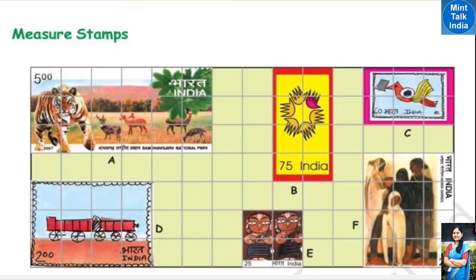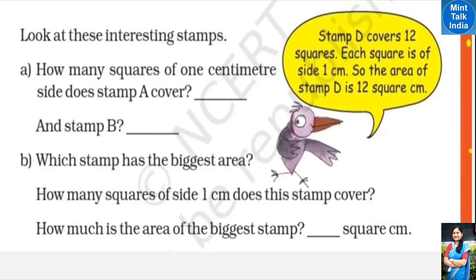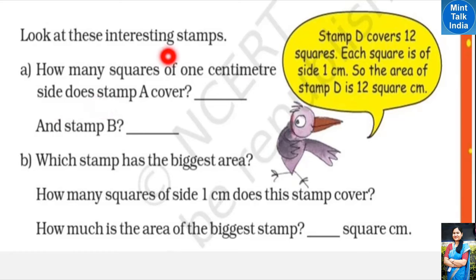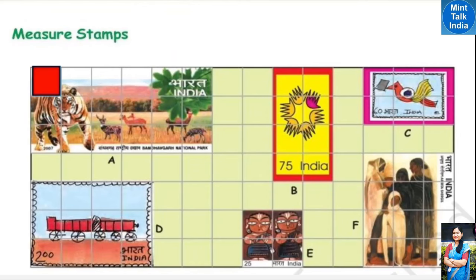Next is the 'Measure Stamps' activity. Here we have some stamps on square grid paper. Square grid paper is a paper with small squares. We have to find out the length and breadth of all these stamps and answer the following questions. Question A: How many squares of 1 cm side does stamp A cover?